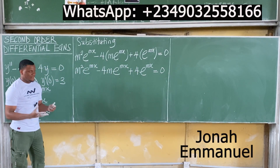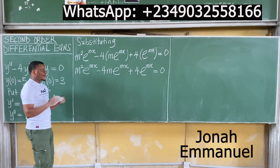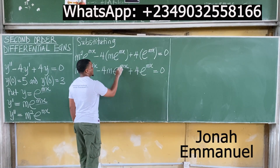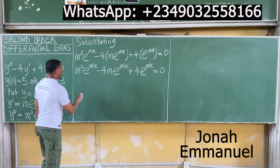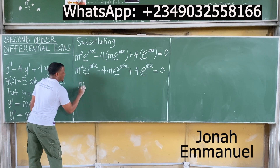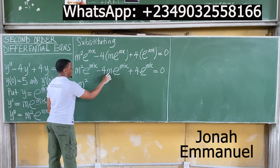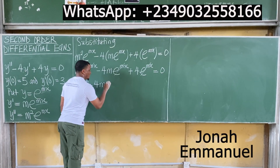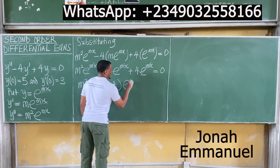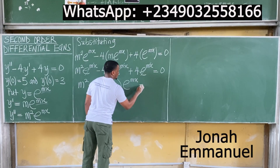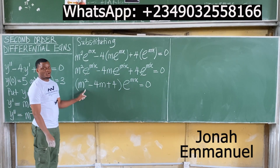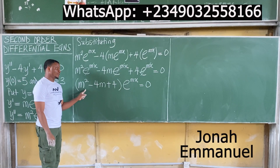At this point, my next task is to factorize e^(mx). Factorizing, I have m² minus 4m plus 4, all times e^(mx), equals 0. Here's my quadratic auxiliary equation.